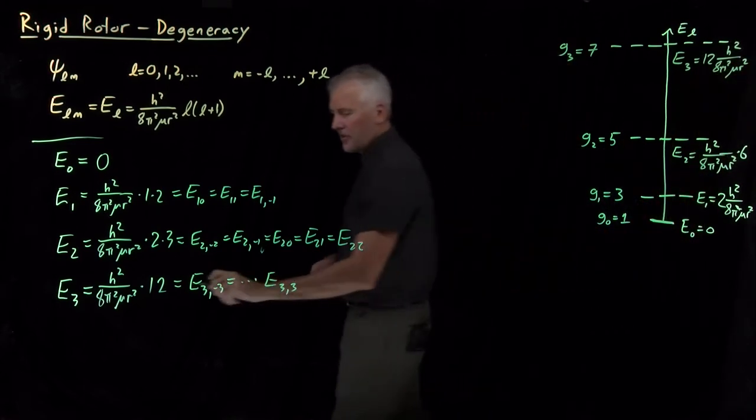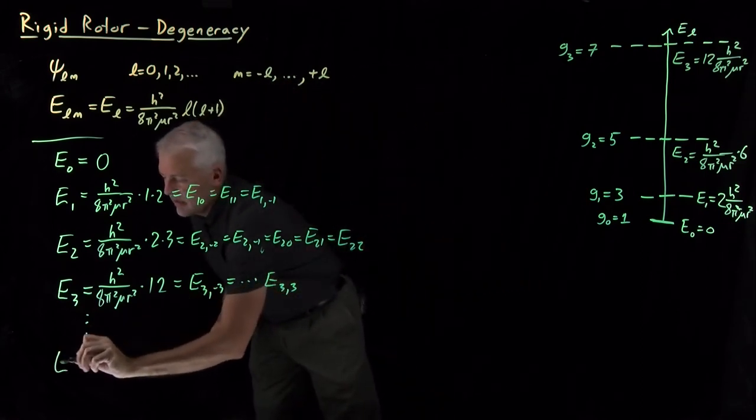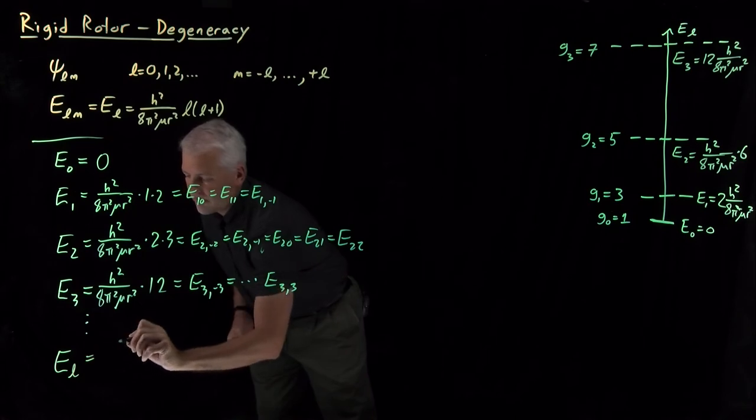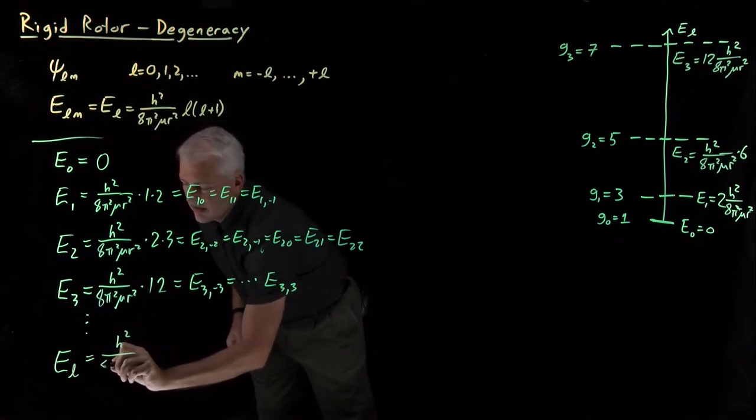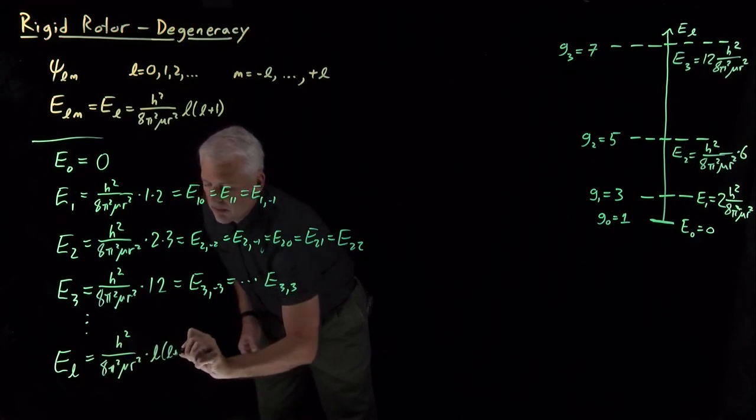And, of course, we could keep going as long as we want. In general, as this equation tells us, the L-th energy level has an energy of ℏ²/(8π²μR²) times L and L plus 1.